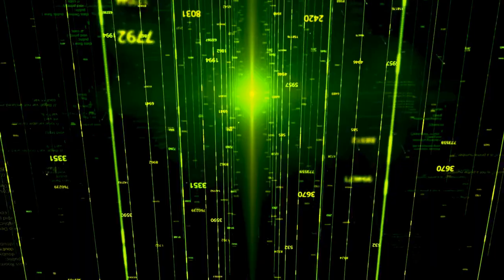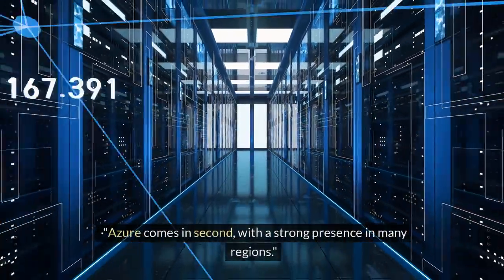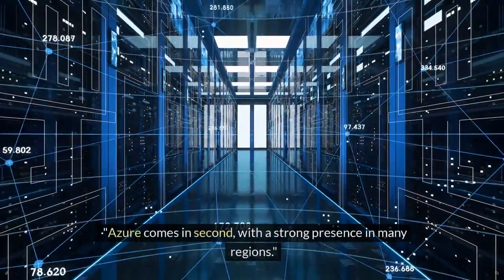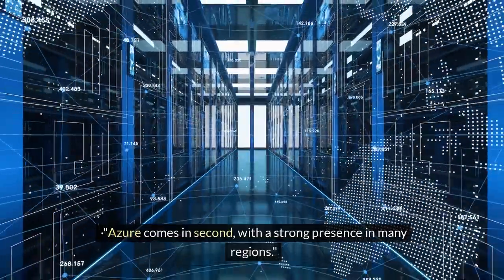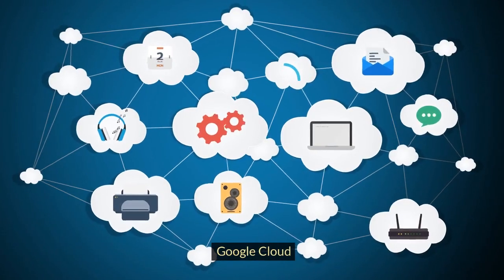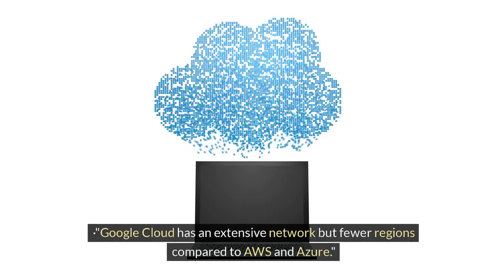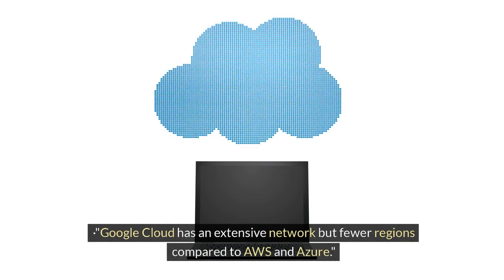Azure comes in second, with a strong presence in many regions. Google Cloud has an extensive network but fewer regions compared to AWS and Azure.